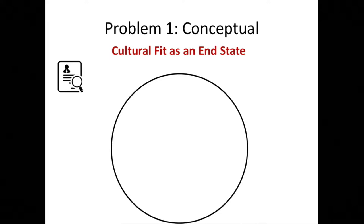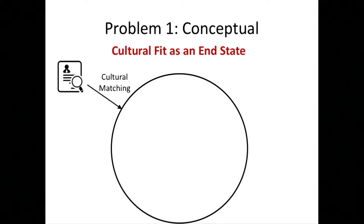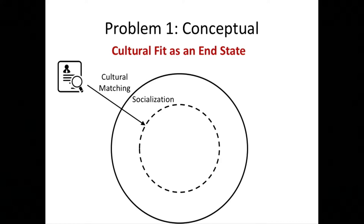One question we ask ourselves is: what makes people fit in culturally into their organizations? There have been two general problems in how both practitioners and researchers have addressed that question. The first is a conceptual one. Imagine this circle represents an organization and this is an individual applying to it. The way people tend to think about cultural fit is a radial movement from the outside to the center, whereby there's cultural matching at the hiring phase, followed by a short period of socialization — euphemistically known as onboarding.